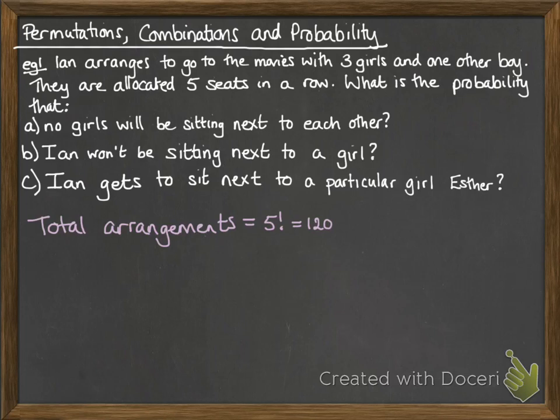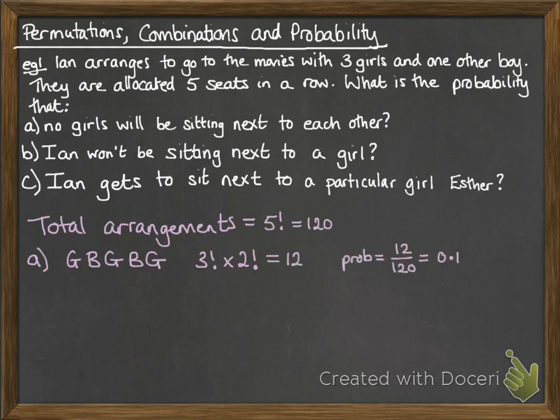To put no girls next to each other, we'd need to arrange them as: girl, boy, girl, boy, girl. The girls would be arranged in three factorial ways and the boys in two factorial ways, giving us a total of 12. So the probability is 12 over 120, or 0.1.